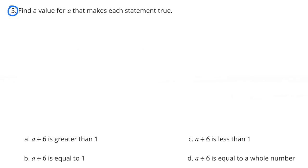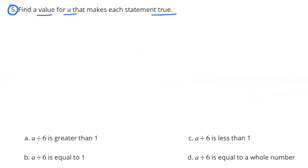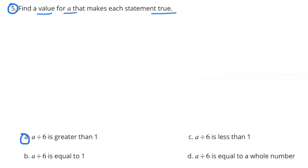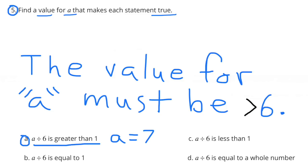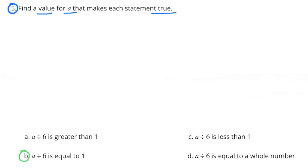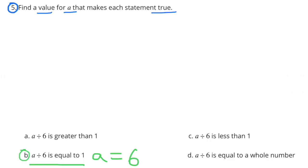Number 5. Find a value for A that makes each statement true. A. A divided by 6 is greater than 1. The value for A must be greater than 6. For example, A equals 7. B. A divided by 6 is equal to 1. A equals 6 because 6 divided by 6 equals 1.